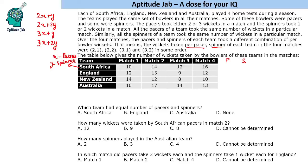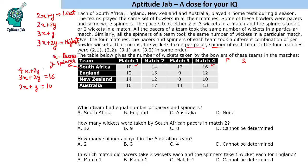Solving for South Africa using the lowest value 2x + y = 10 and the highest value 3x + 2y = 16: multiply the first equation by 2 to get 4x + 2y = 20, then subtract to find x = 4 and y = 2. So there are 4 pacers and 2 spinners for South Africa.